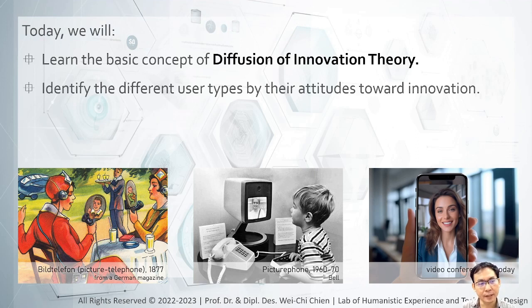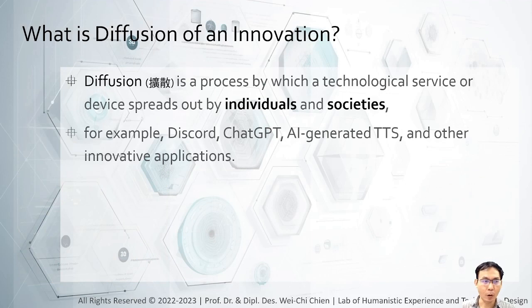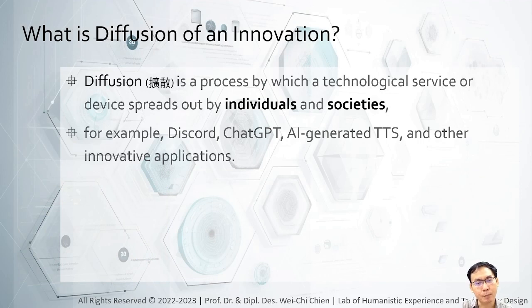By learning this theory, we will also learn that there are different user types categorized by their attitudes toward innovation, and uncover the factors that influence users' acceptance of an innovation. So what is the diffusion of innovation? Diffusion of innovation implies the process when a technological service or device spreads out by individuals and societies.